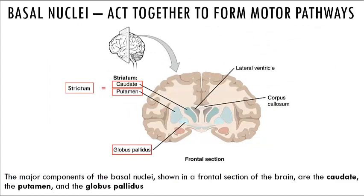The basal nuclei are islands of gray matter located deep within the white matter of the cerebrum. They function to subconsciously control large automatic skeletal muscle contractions — for example, your arms swinging when walking — and play a role in maintaining attention. They also produce dopamine, so disorders of the basal nuclei can result in too much or too little dopamine, affecting movement. This is seen in Huntington's disease (too much) and Parkinson's disease (too little). The major components are the caudate, putamen, and globus pallidus.